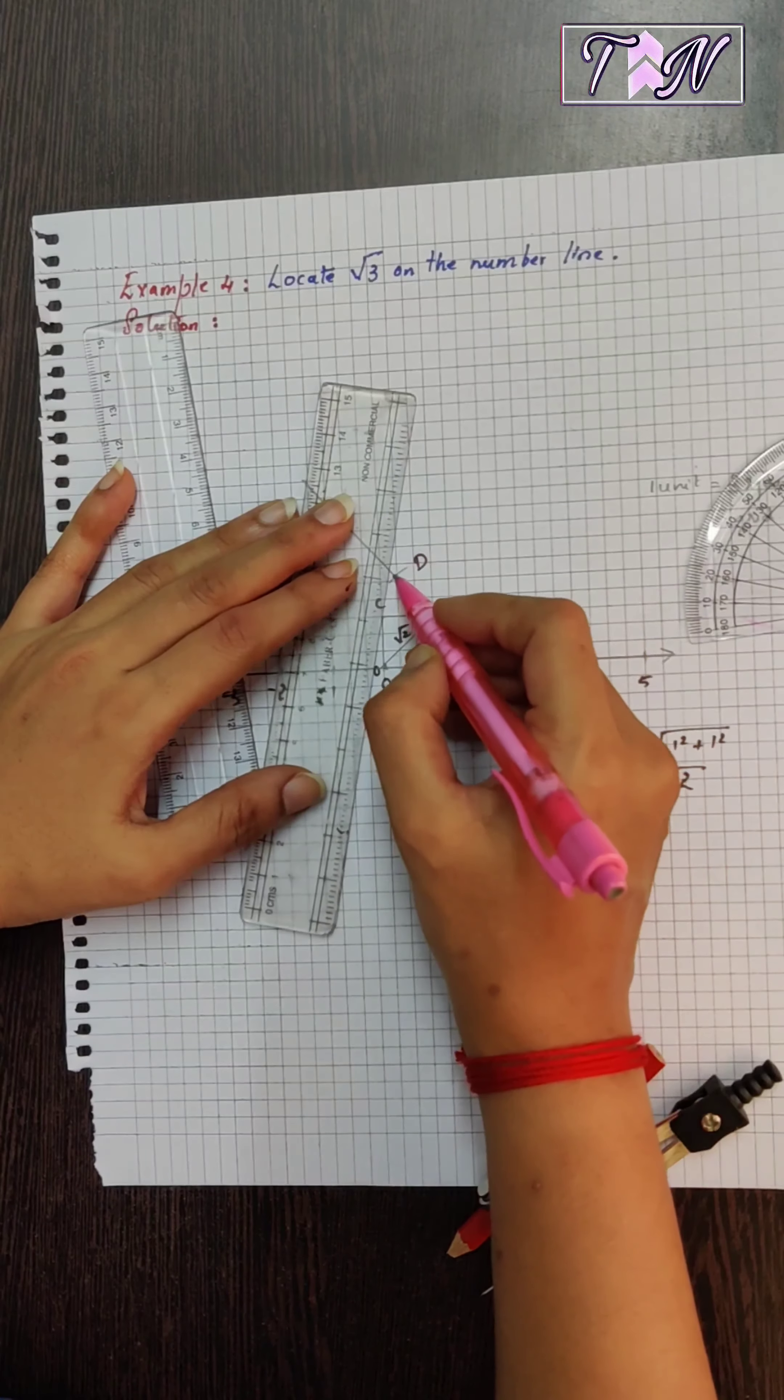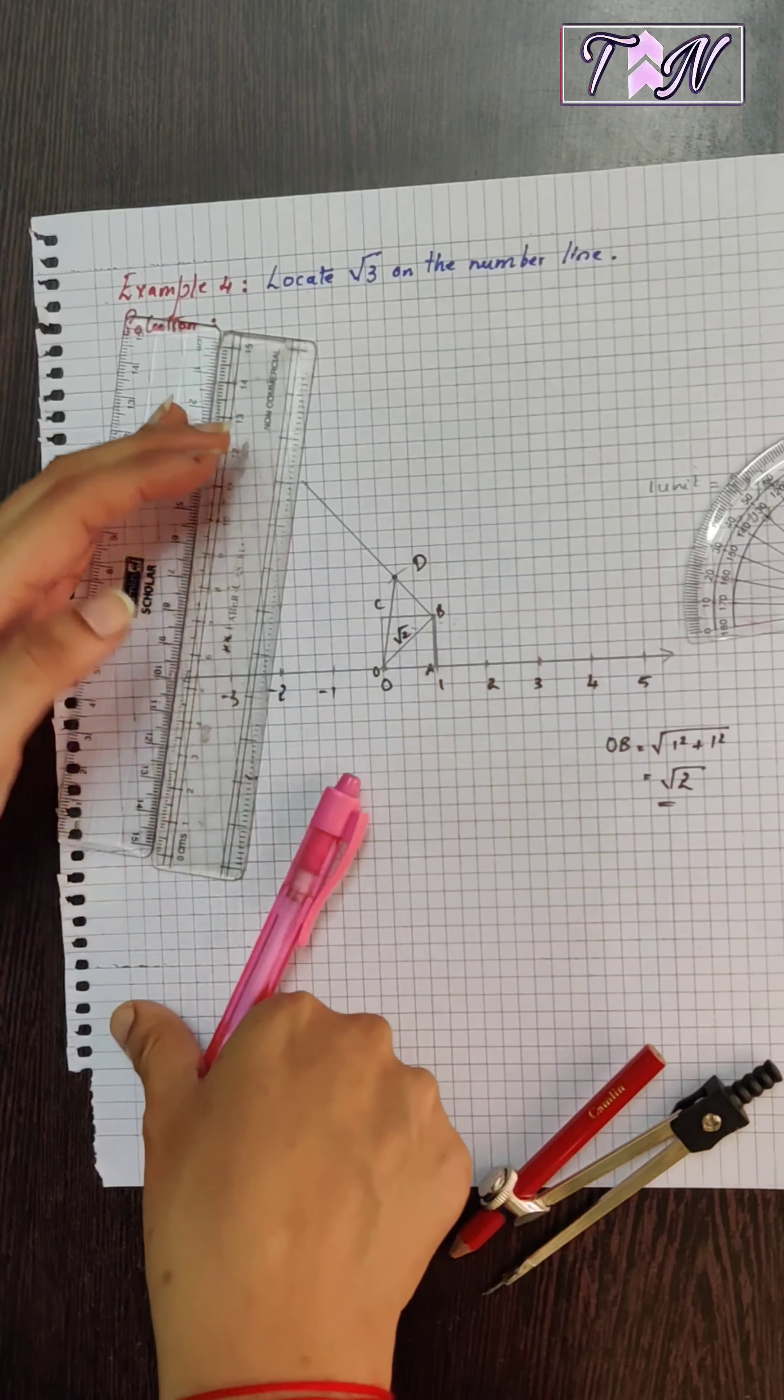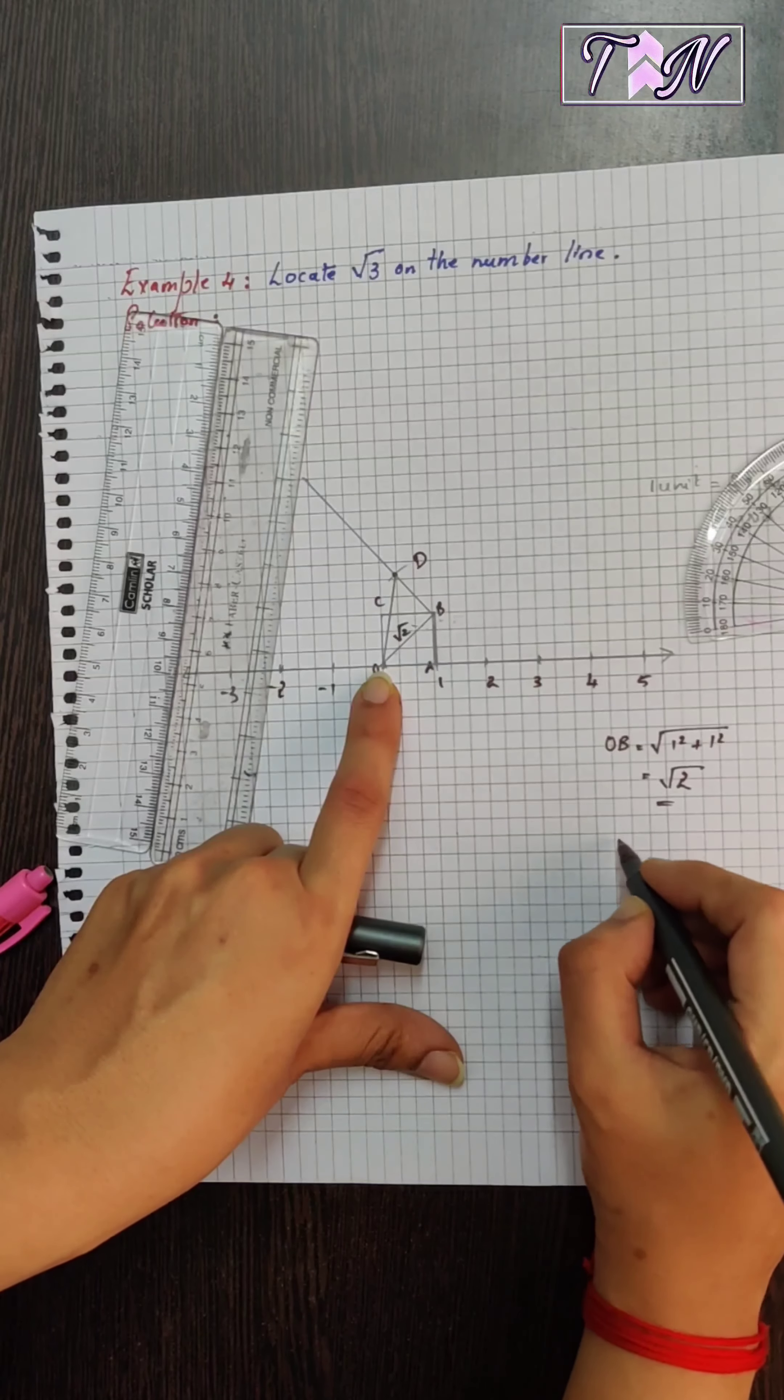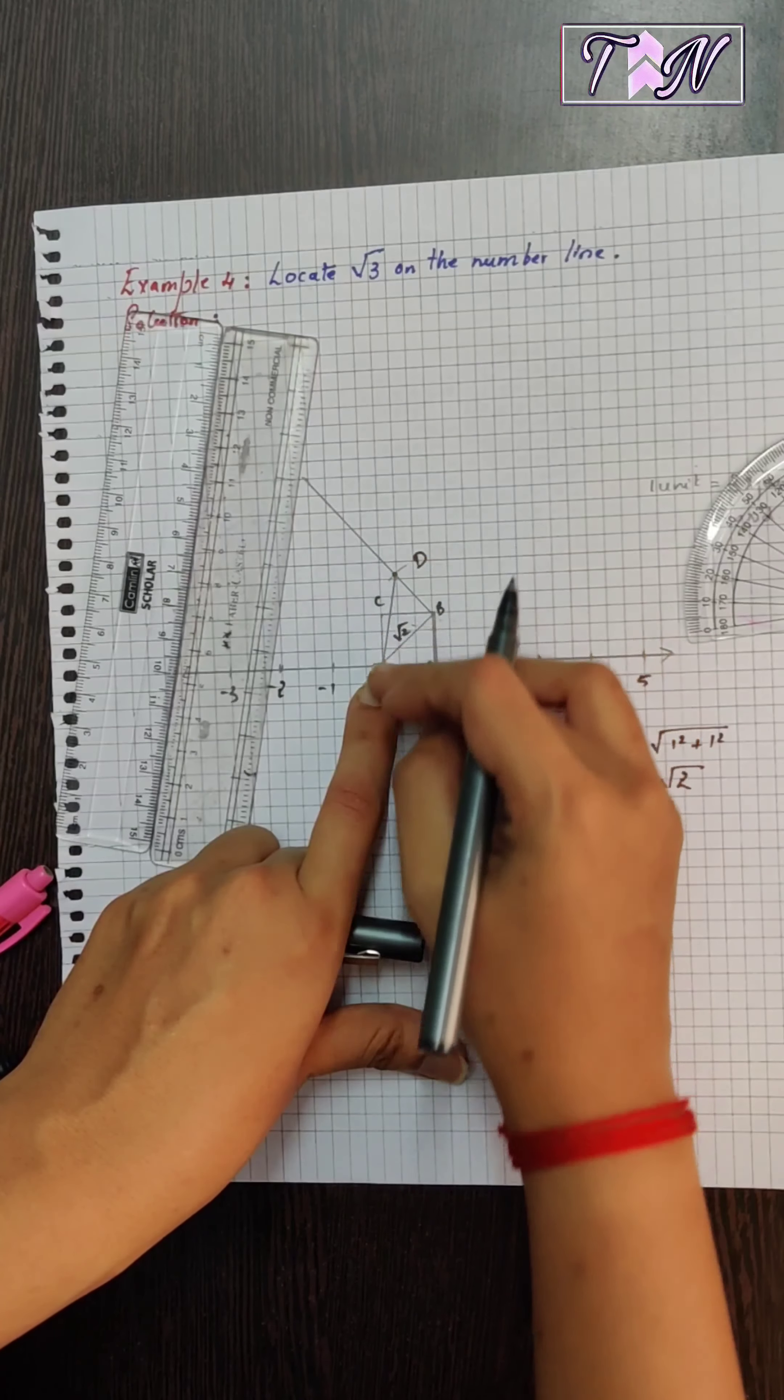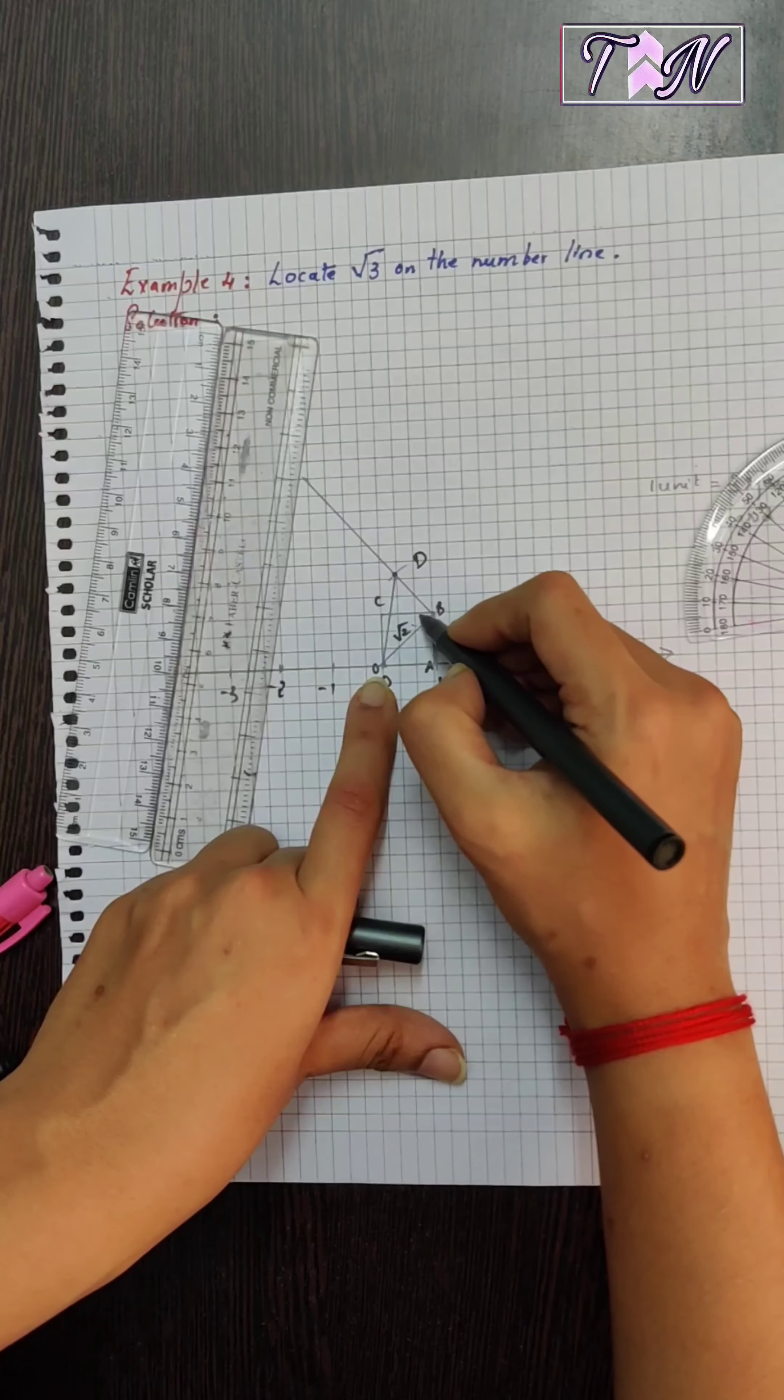Now, join D to O. This line which I have drawn, let us calculate how much it will be. So, OD. I am sorry, I said diagonal, it is not diagonal. We joined the line OD. It forms a triangle OBD where this is the right angle.